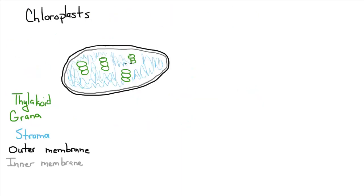You can see my little drawing here of the chloroplasts. You've got the outer membrane, the inner membrane, the thylakoids which are organized into big stacks called grana, and the stroma is just this material between the thylakoids and the inner membrane.